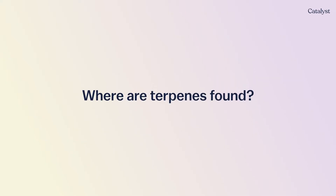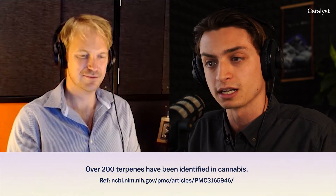Terpenes can be found absolutely everywhere — they're extremely abundant throughout nature. The same terpenes found in cannabis are found in other plants like rosemary, lavender, mango, sage, pine trees, and eucalyptus. If you've ever experienced a drop of lavender on your pillow or walked through a warm florist on a sunny afternoon, you have experienced terpenes. About 20,000 have been identified, with around 200 expressed within the cannabis plant.